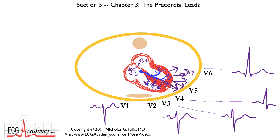V5 will progress again towards V6. You may have a little residual S wave there, and then V6 will finally look as I've drawn it.